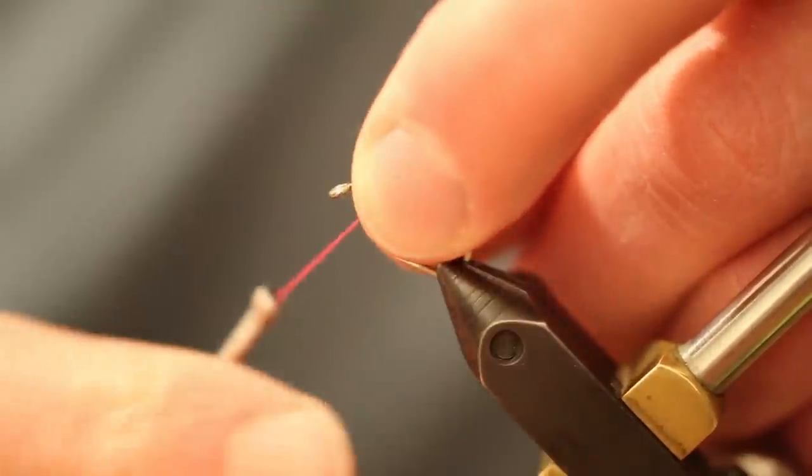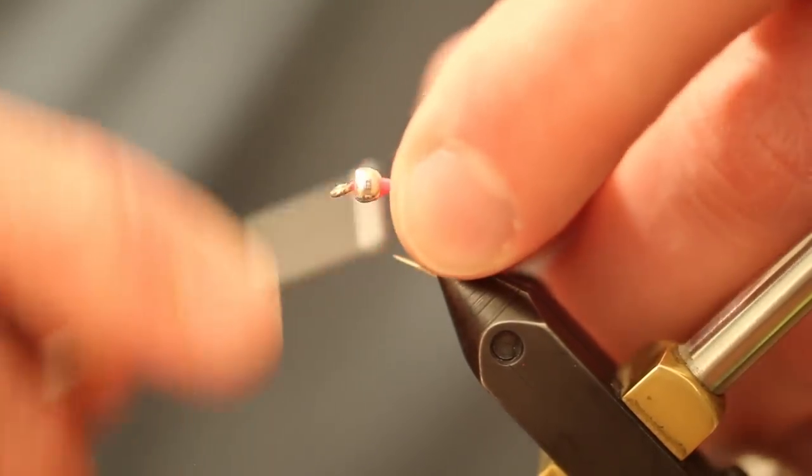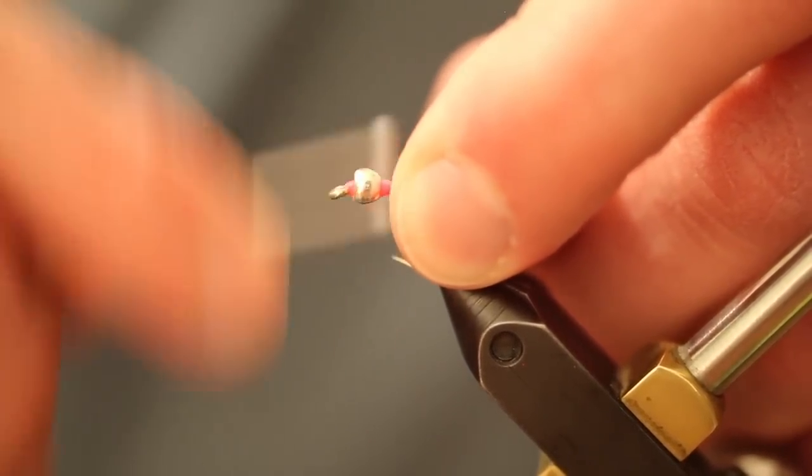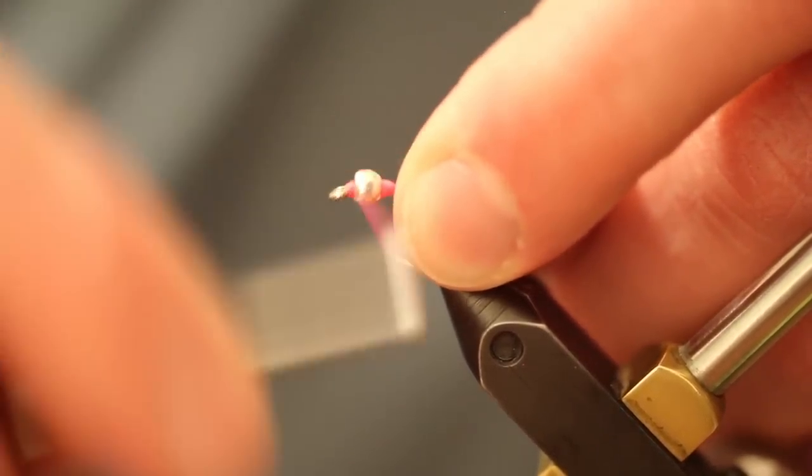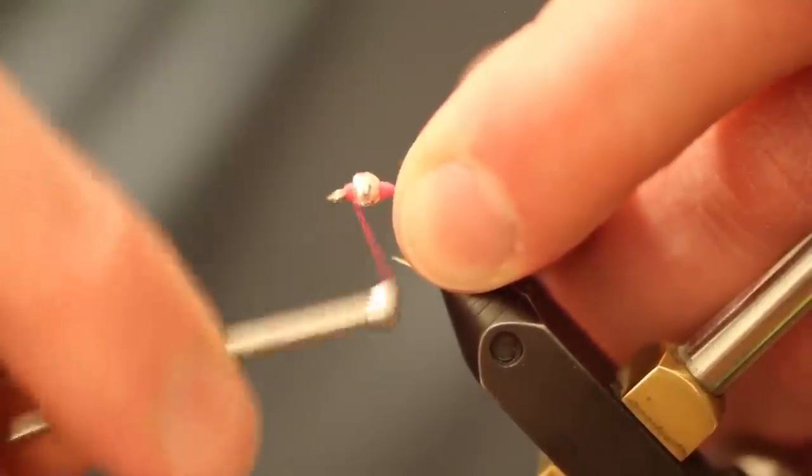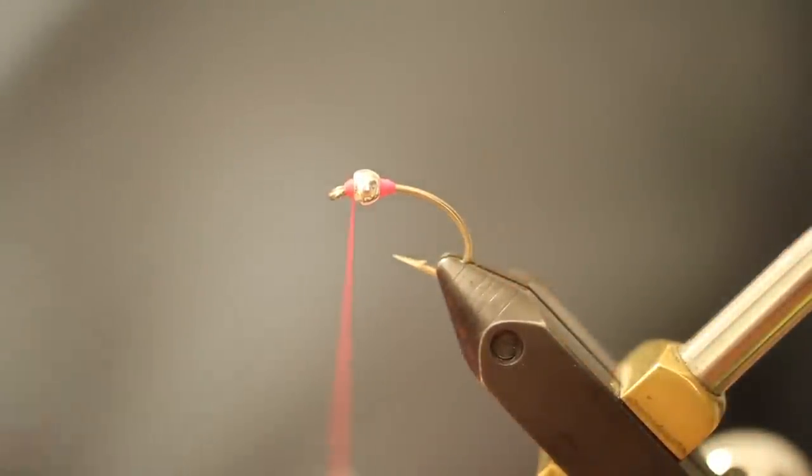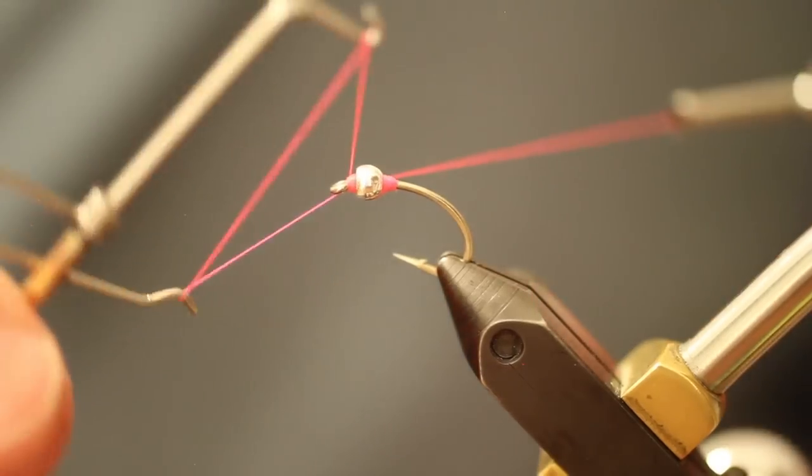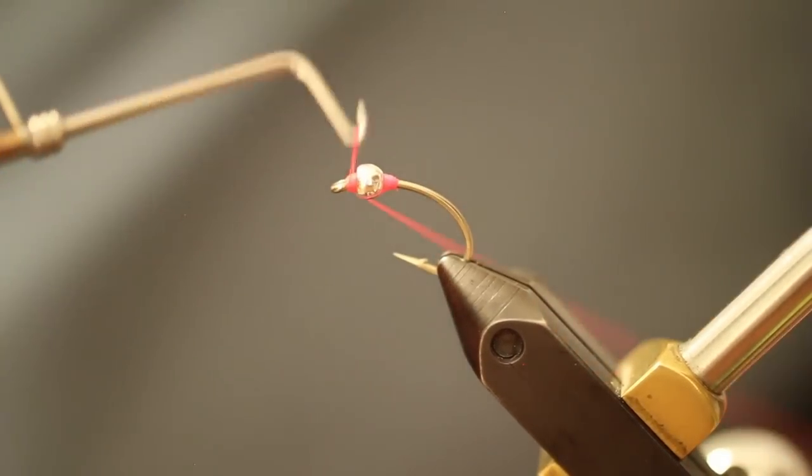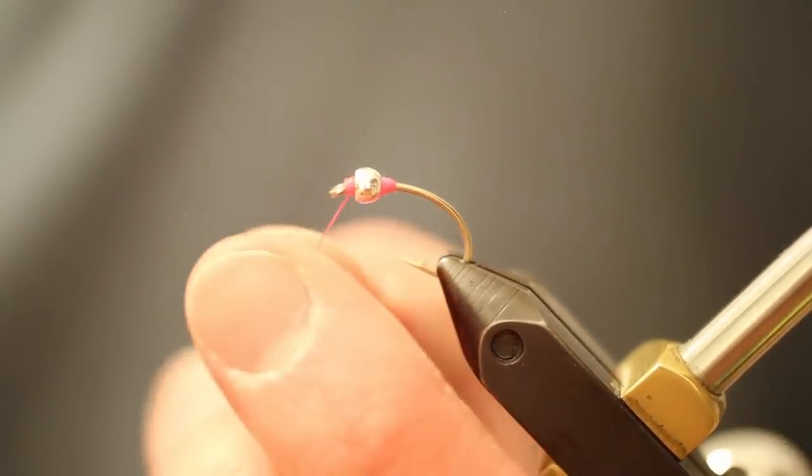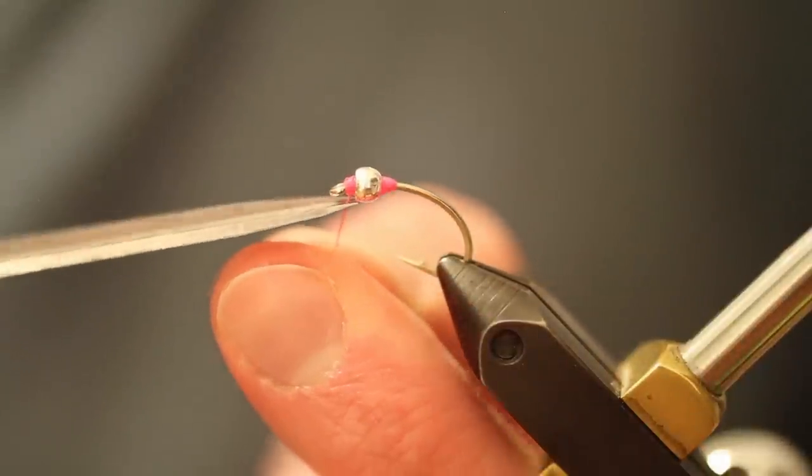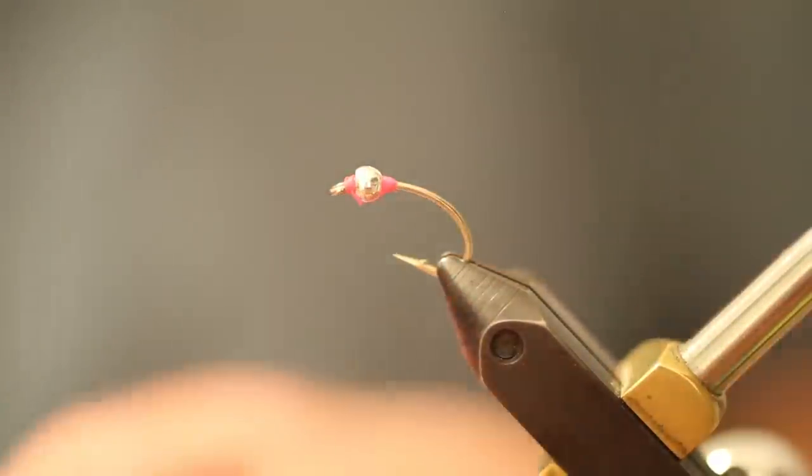At that point we're going to take this thread, wrap it under the bead and forward. We're going to take this thread and build up another anchor point for that bead in front. At that point, we don't need the thread anymore. Practically done with the thread. So let's go ahead and tie it off and clip it off and now we're done with the thread.